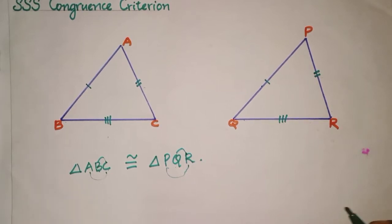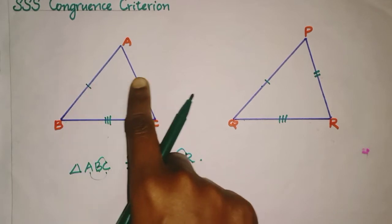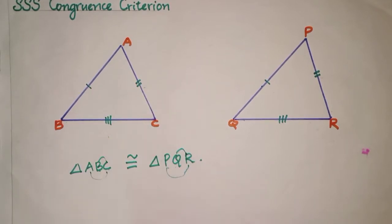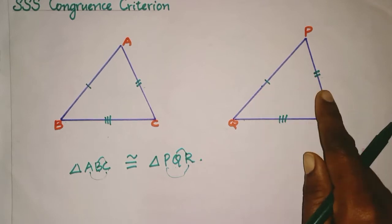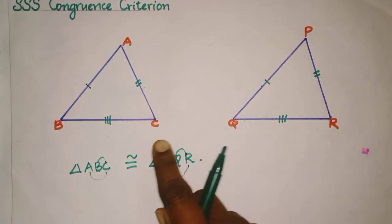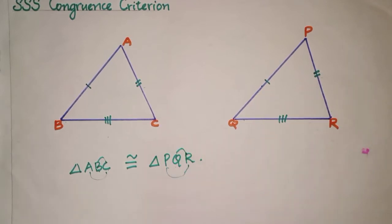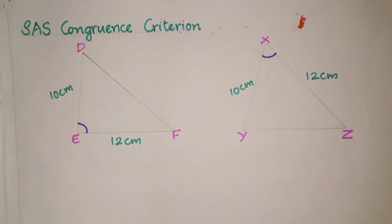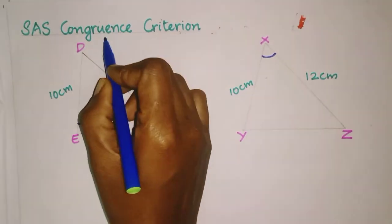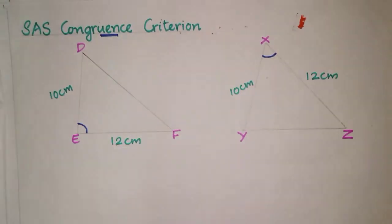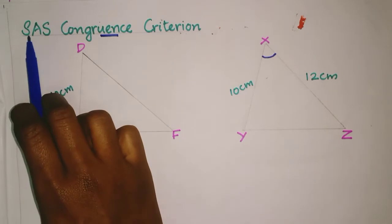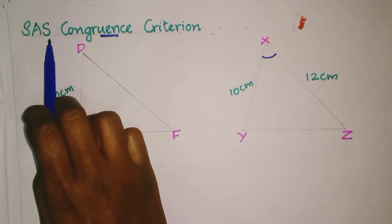If under a correspondence three sides of one triangle are equal to the corresponding three sides of another triangle, then they are said to be congruent. Next is the SAS congruence criterion — side, angle, side.